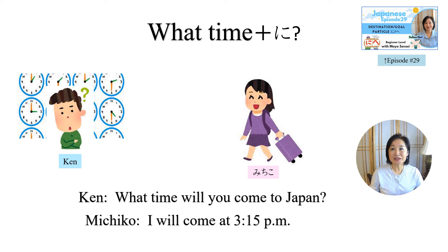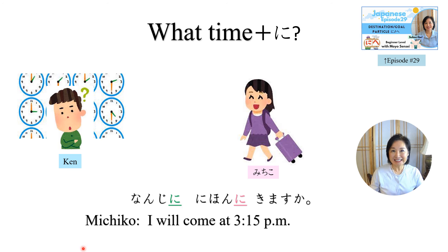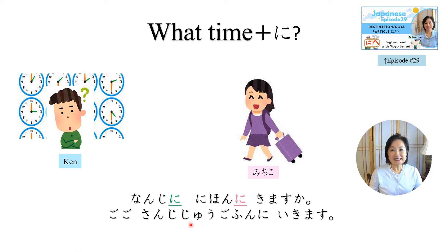To ask someone at what time they do certain things, use the question word 'what time' — 何時 — and then add the particle に. Please ask Michiko this question in Japanese: 何時に日本に来ますか？いいですね。This に is the time-reference particle, and this に is the destination particle. Michiko's response is 'I will come at 3:15 pm' — 午後3時15分に来ます。いいですね。